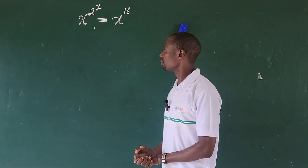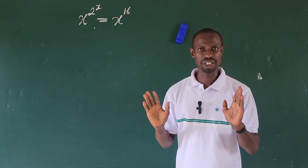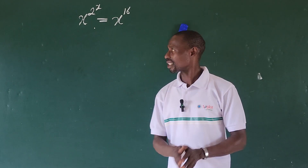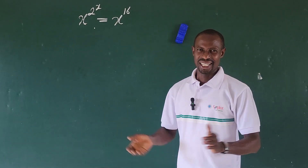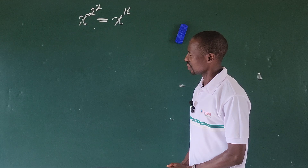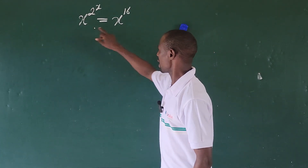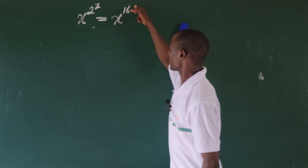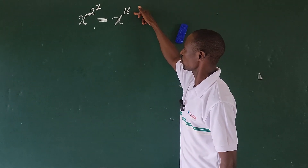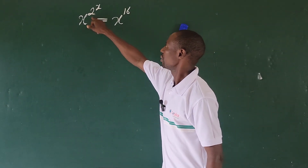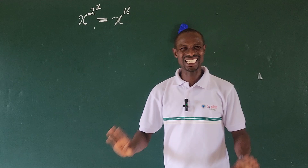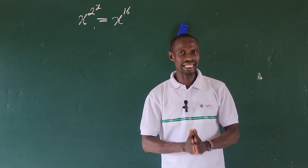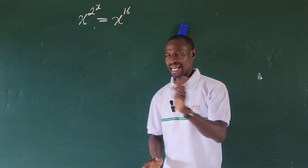Today we have a very simple algebra problem on the board. A good mathematician will discover that the quick answer to this question is just four, because these bases are the same. We can write 16 as 2 to the power of 4, so x equals 4 simply. But there are also three roots to this challenge, so how do we get all three roots? That is the aim of this video.